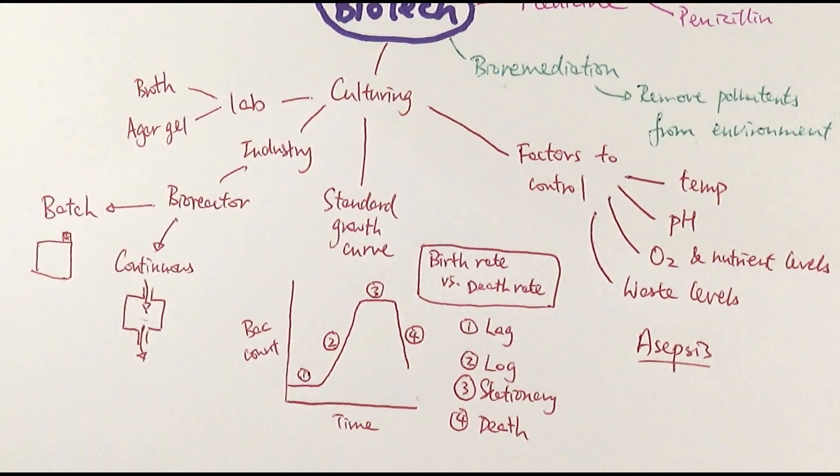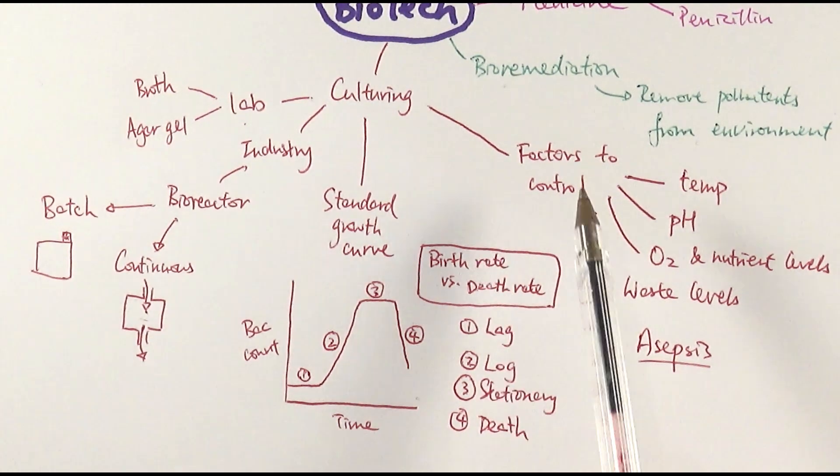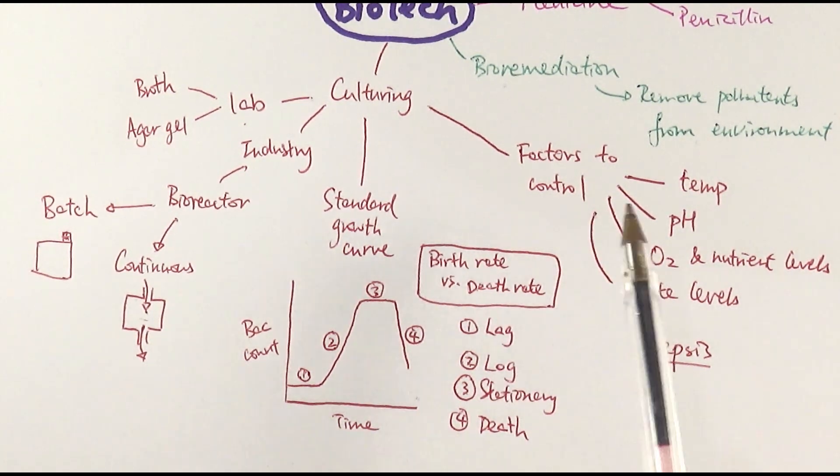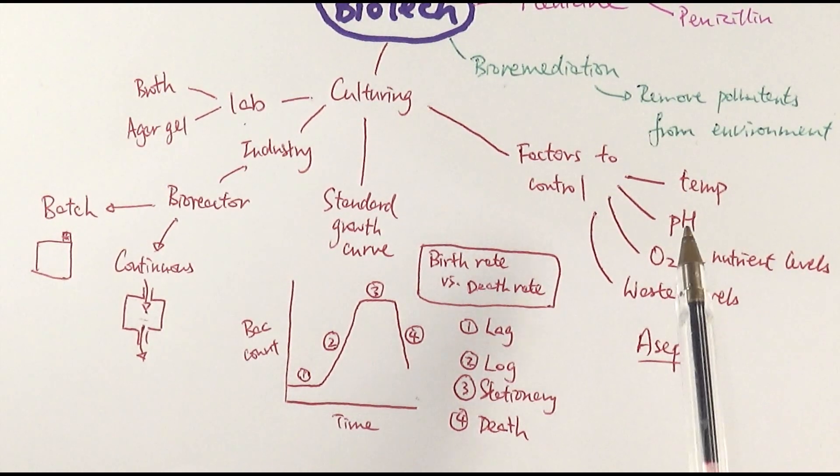So just very quickly, a few things. You can do it in a lab setting or an industrial setting. Key thing you need to know is the standard growth curve. You need to be able to describe and explain it by comparing the birth rate and the death rate of the four different stages within the curve. Be aware of what are the factors to control. Be able to explain why we control them, basically what are the consequences if we don't. And perhaps some extension questions will be, how can we make sure we control it in a bioreactor, for example.